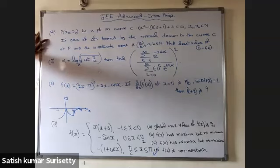Fifth problem: α = ln(√cot(π/12)). Find the value of [Σ(k=0 to ∞) e^(−2kα)] / [Σ(k=0 to ∞) (−1)^k · e^(−2kα)]².